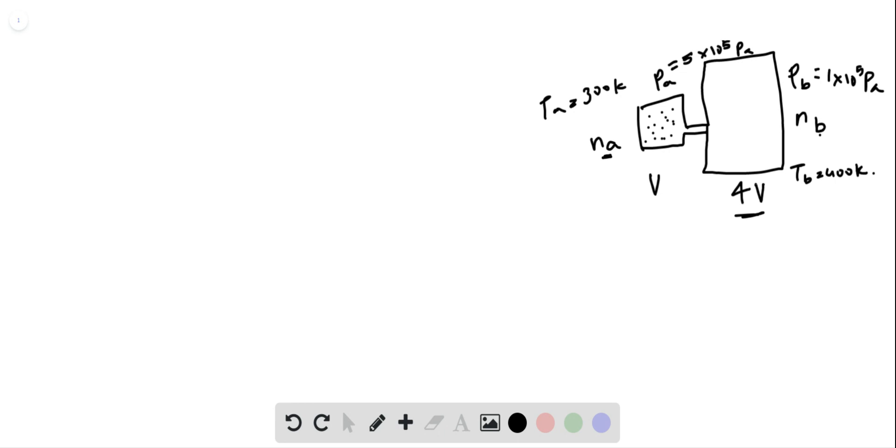And we will call the temperatures TA and TB and the pressures PA and PB. Let us say NA and NB are the number of atoms initially in cavity A and cavity B.